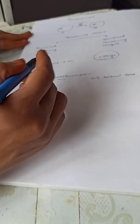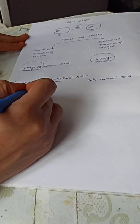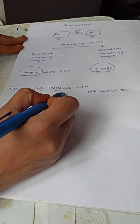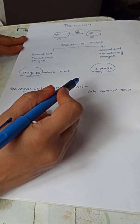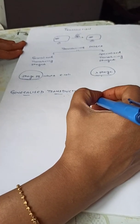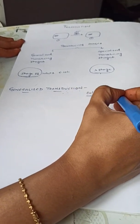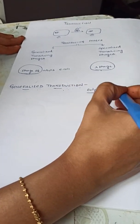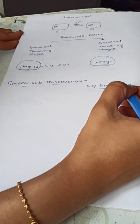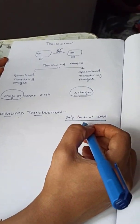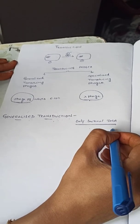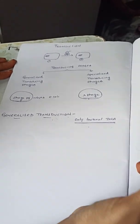In generalized transduction, the basic point to be highlighted is that only bacterial DNA — only a bacterial DNA fragment — will be transported from the donor bacteria to the recipient bacteria.